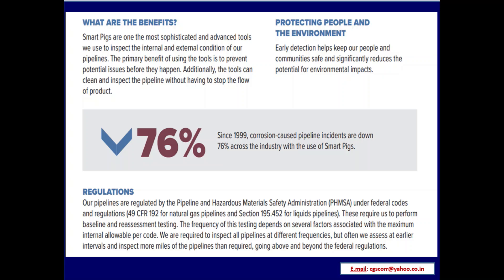Regulations: pipelines are regulated by the Pipeline and Hazardous Materials Safety Administration (PHMSA) under Federal Codes and Regulations 49 CFR 192 for natural gas pipelines and Section 195.452 for liquid pipelines. These require baseline and reassessment testing. The frequency depends on several factors associated with the maximum allowable operating pressure per code. Often, assessments are performed at earlier intervals and more pipeline miles are inspected than required, going above and beyond Federal regulations.